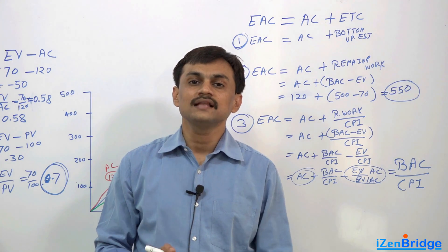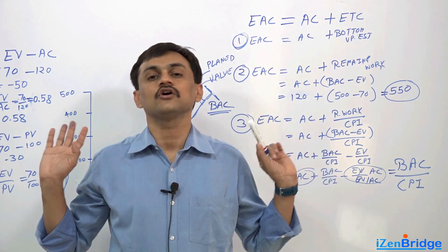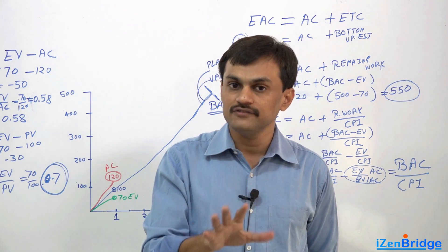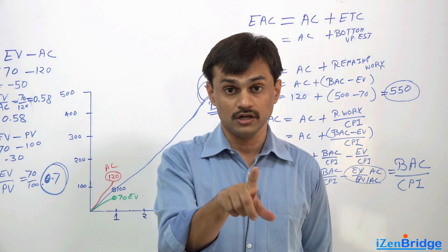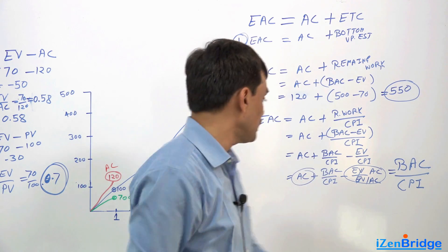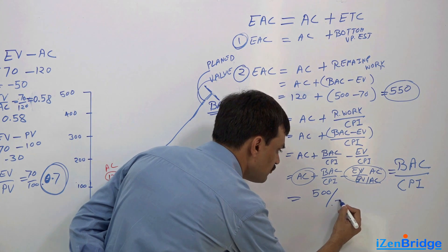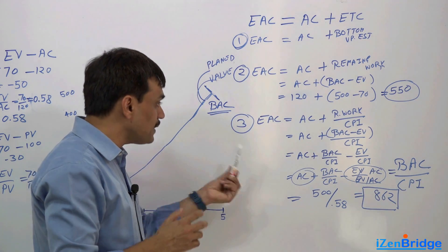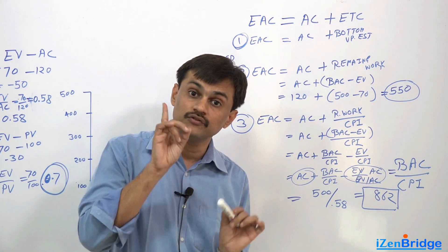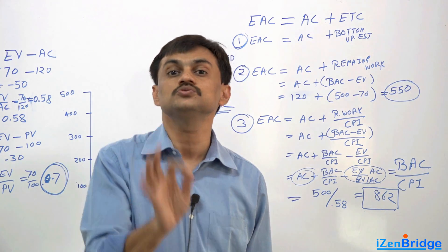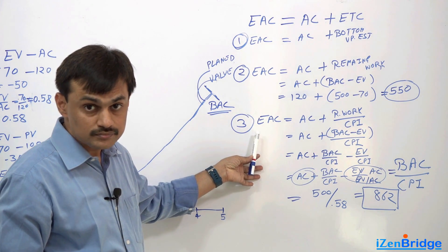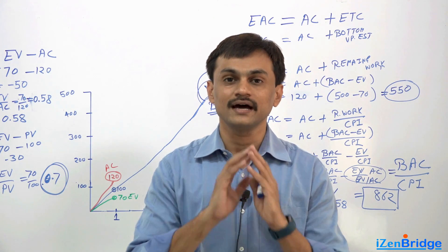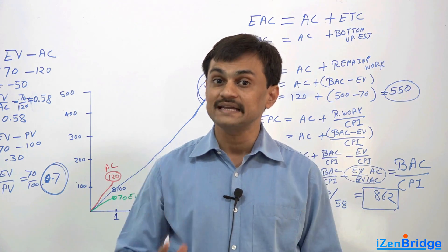Simply put: whatever budget we had, we need to factor in the cost performance index. We need to assume we are going to get only 58 cents from each dollar. So if we planned spending 500 dollars but are only getting 58 cents worth from each dollar, we need to recalculate. That is 500 divided by 0.58, which gives us 862 dollars. So if the CPI trend continues at 0.58, the estimated completion is 862 dollars. Apply this formula when your question indicates these variances are going to stay — they are not dying out and you need to factor this reality in.